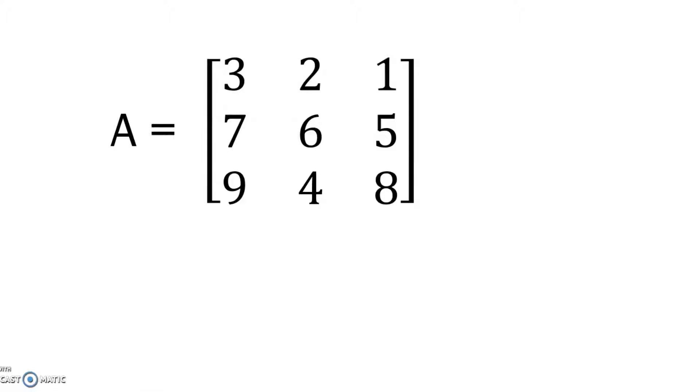And let's take the item 2, which is in first row, second column. Let's find the minor corresponding to this particular element.